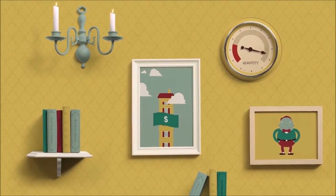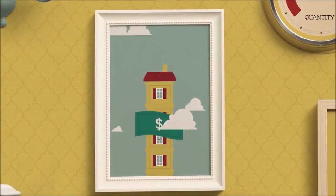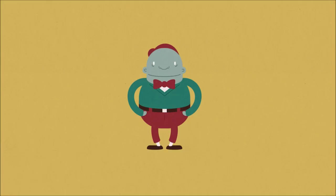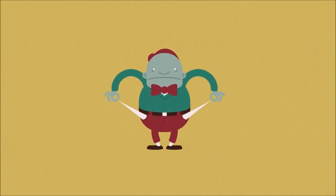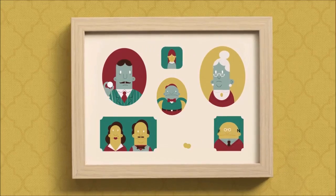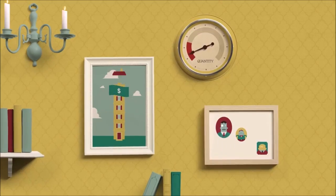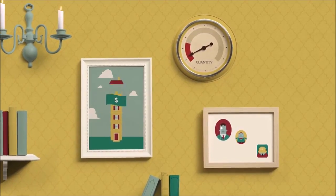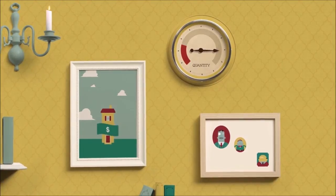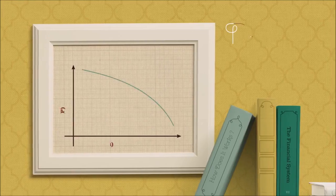According to economic theory, when housing prices go up, quantity demanded goes down, because less people are willing and able to buy. And when housing prices go down, quantity demanded goes up. This relationship between price and demand is called the demand curve.